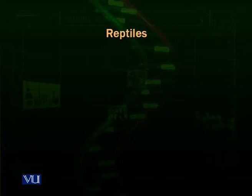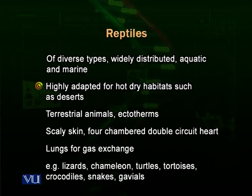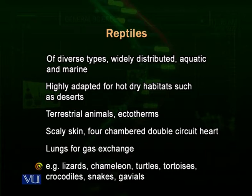Now we talk about the next group: reptiles. Reptiles are also ectotherms, previously called cold-blooded animals. They are a diverse group adapted to tolerate harsh environments, mostly dry and arid environments. Reptiles are common inhabitants of almost all ecosystems, but particularly thrive in deserts. Different types of lizards, snakes, chameleons, turtles, and tortoises grow well in various harsh environments, particularly in the deserts.